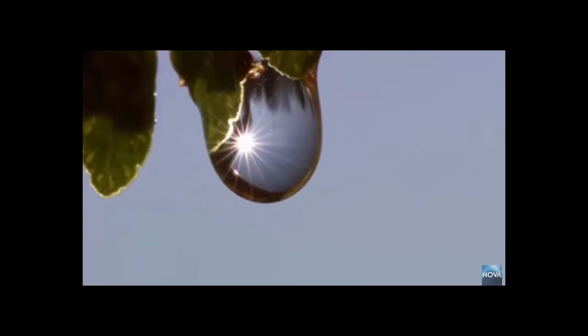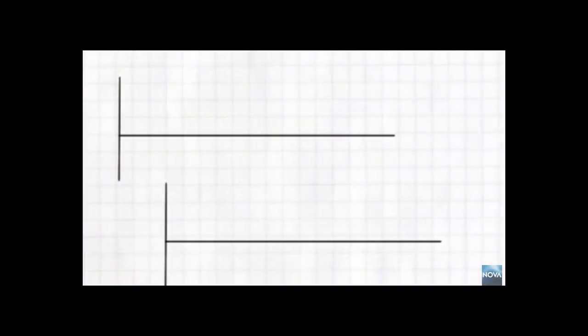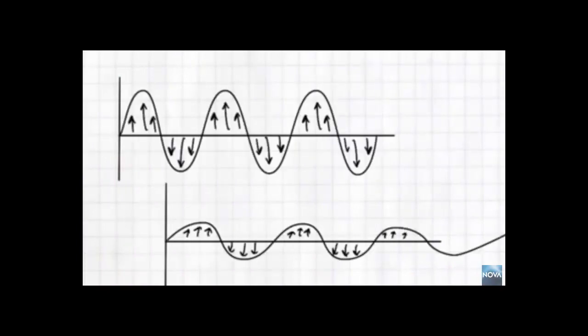Once they break free, it's about an eight and a half minute journey to earth. The photons that carry energy from the sun travel in the form of waves. Alternating electric and magnetic fields push each other forward at the constant speed of light.